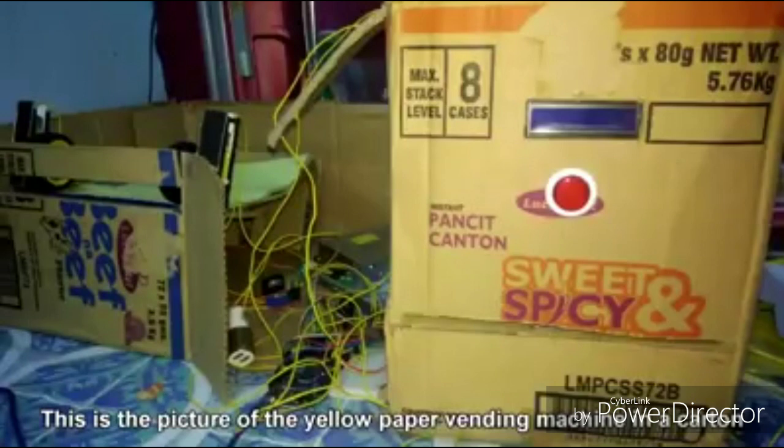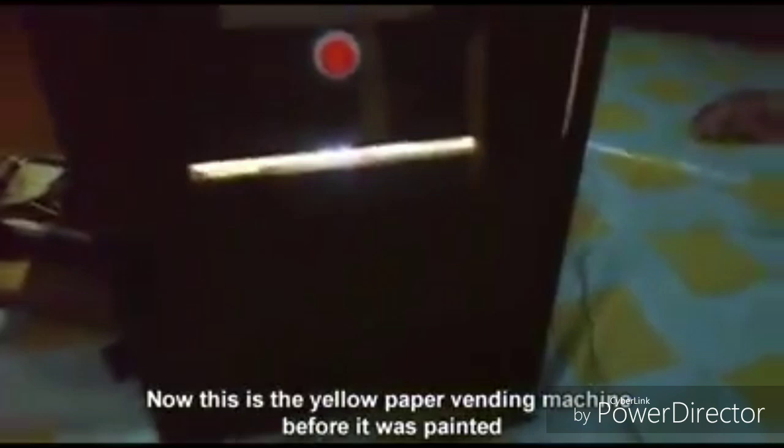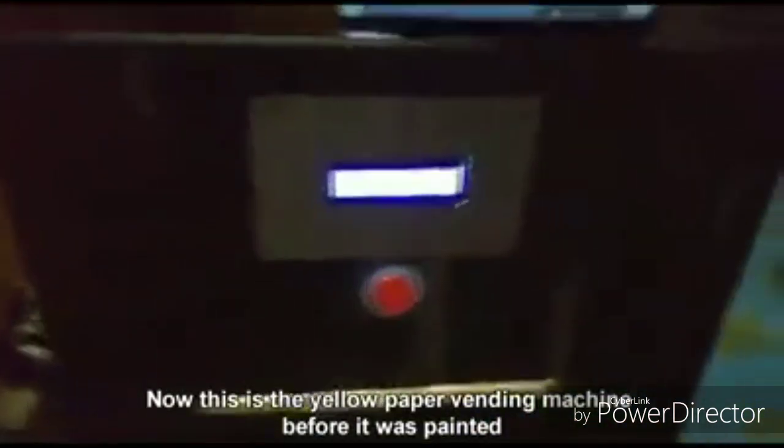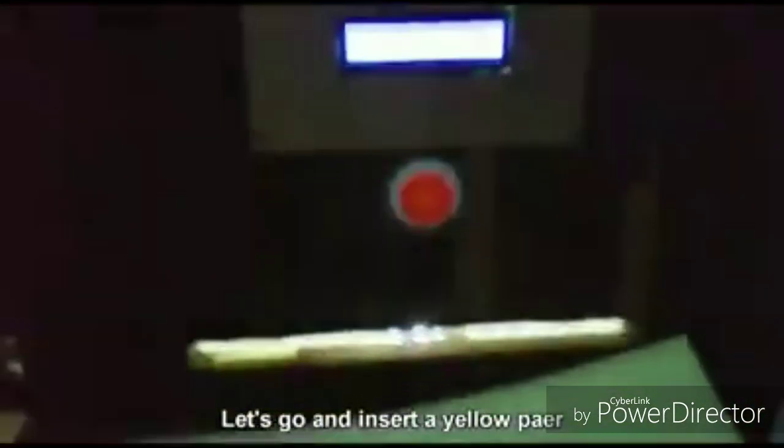This is the picture of the yellow paper vending machine in a carton. Now this is the yellow paper vending machine before it was painted. A bit messy and light is needed inside, so there it is. Let's go and insert a yellow paper. There, counted as one.